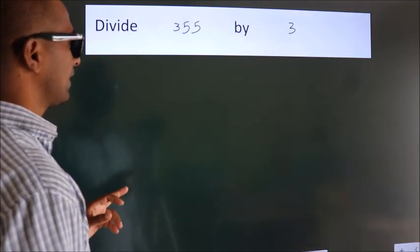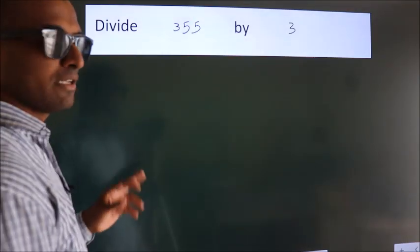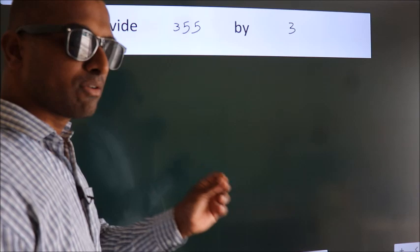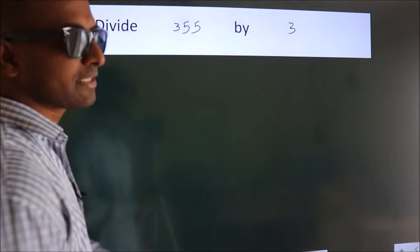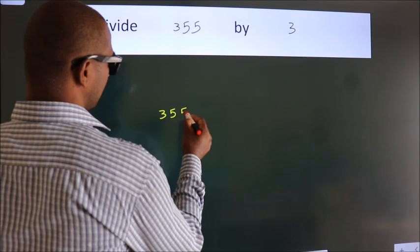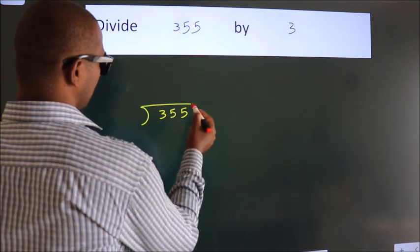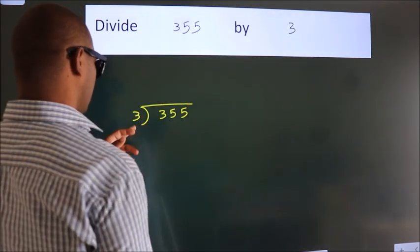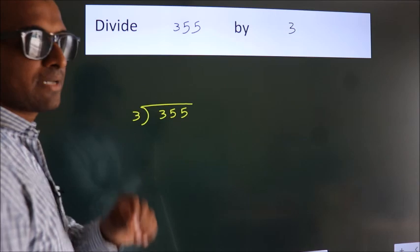Divide 355 by 3. To do this division, we should frame it in this way. 355 here, 3 here. This is your step 1.